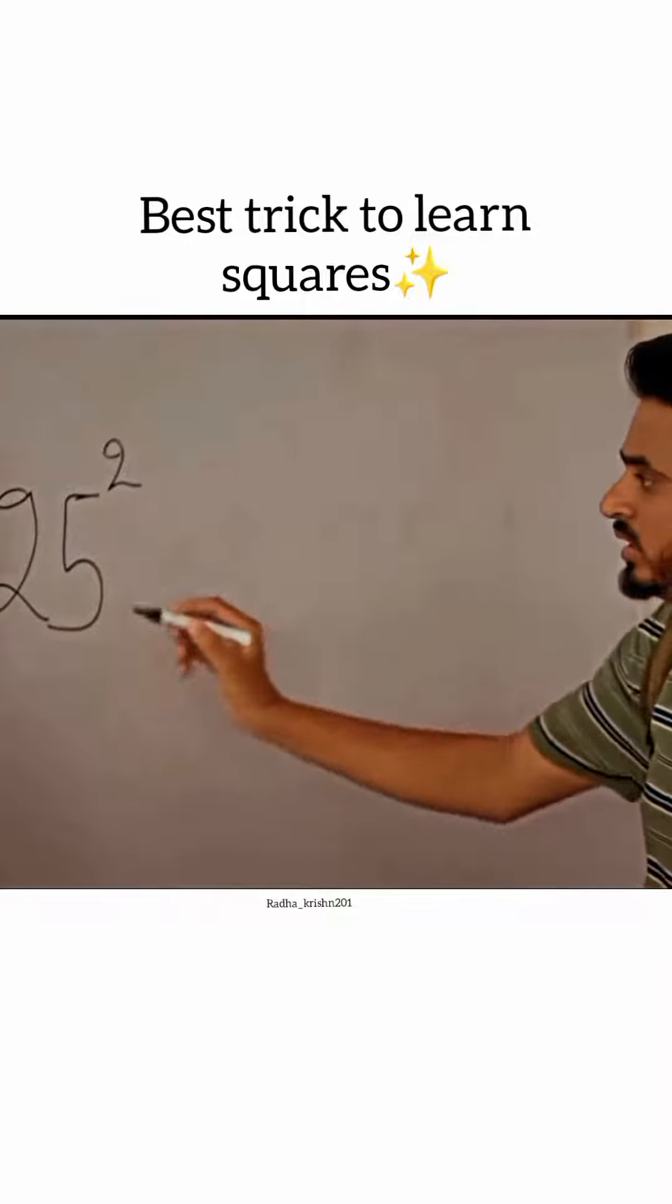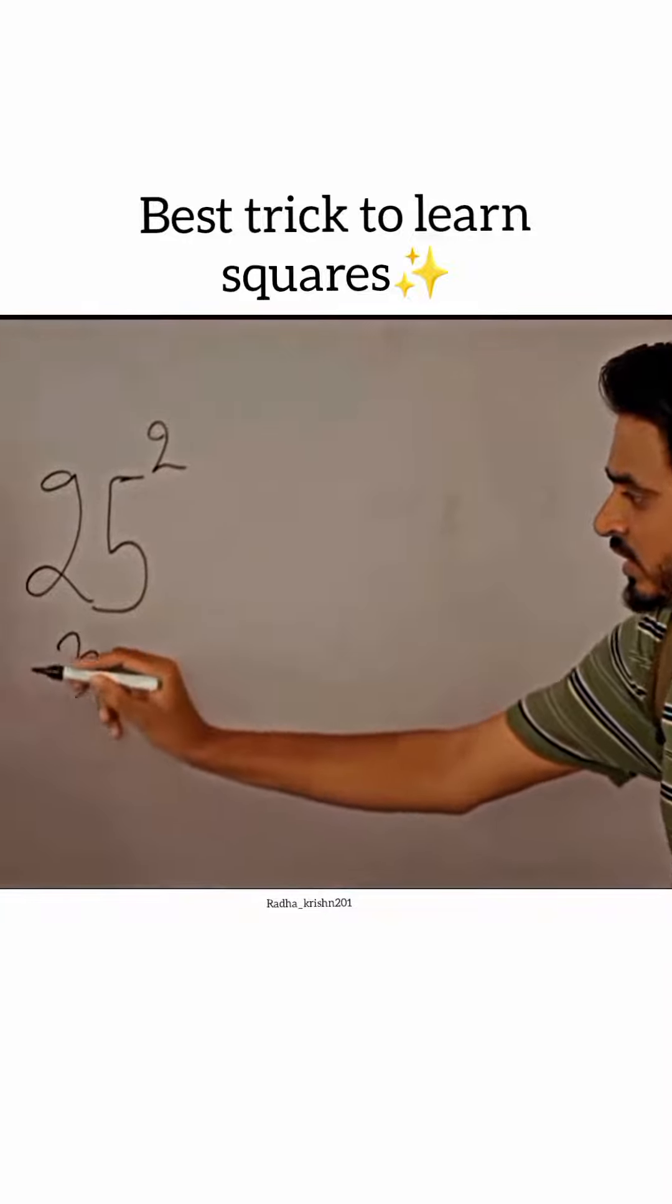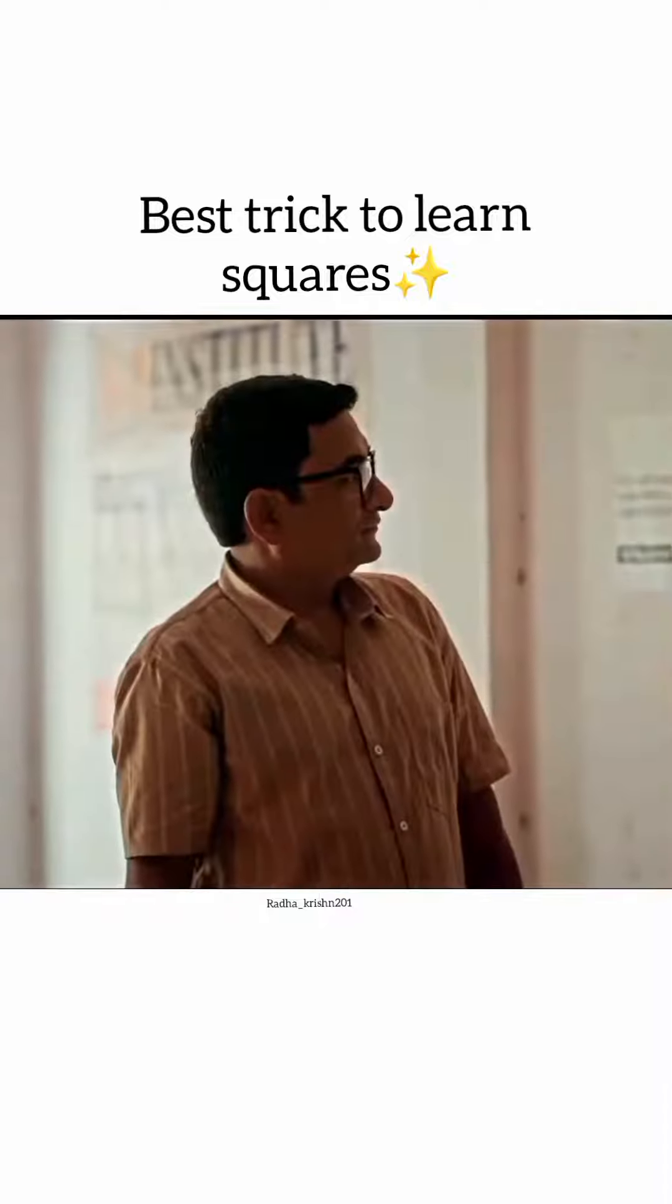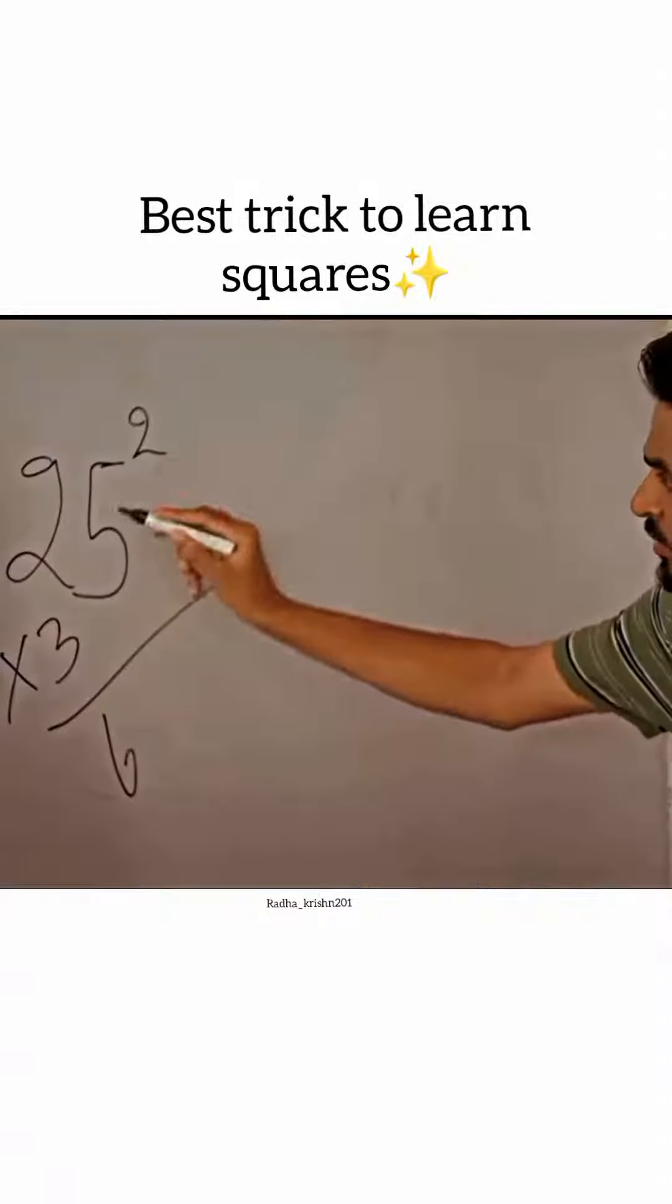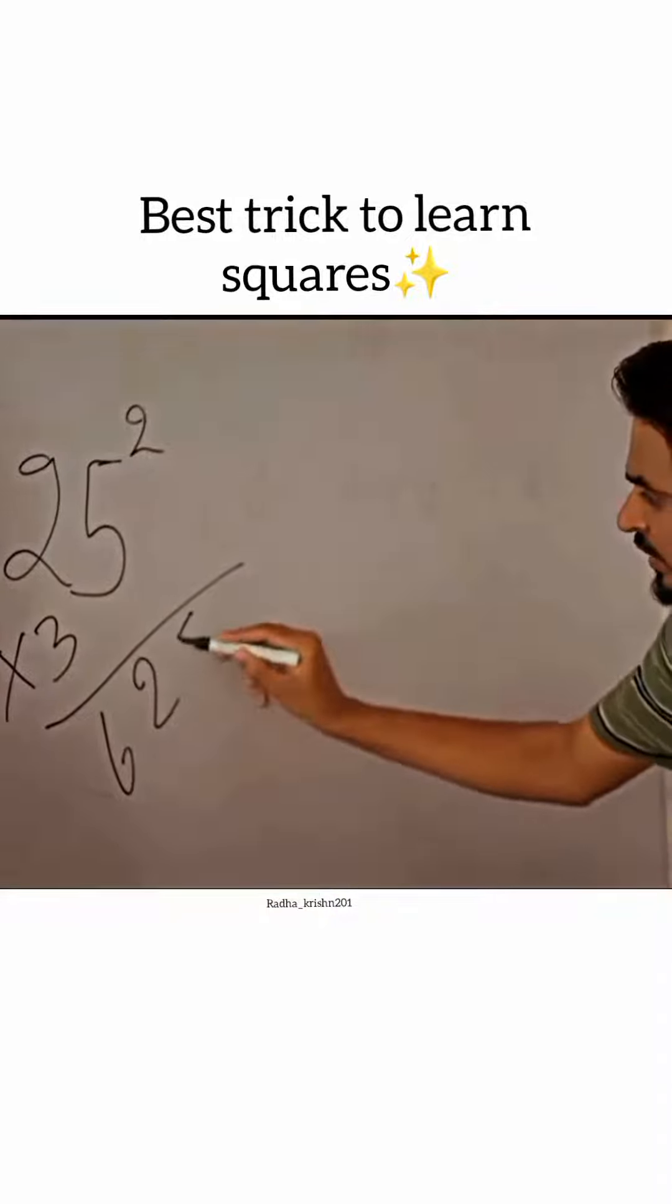We have put square here. After 2, there is 3. We multiply: 2, 3, 6. 5 square is 25.